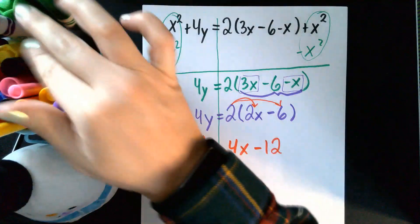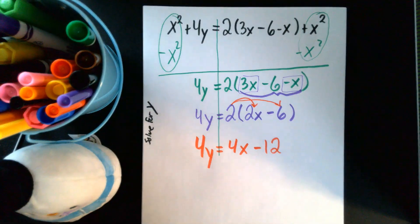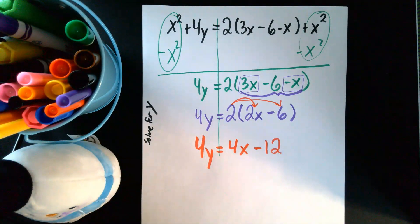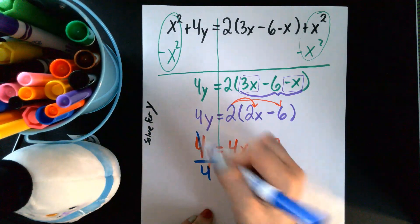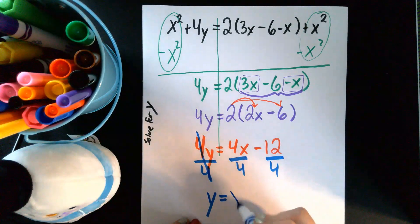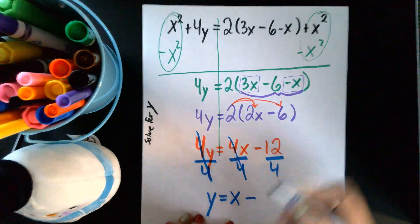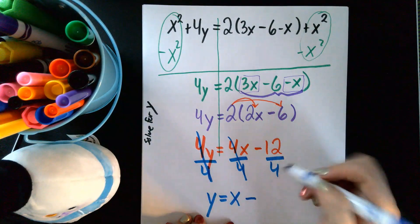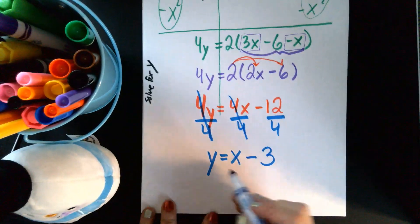Okay, so we did distributive property, probably not used blue. So our very last step is to divide. So we're gonna divide everything by four. Those fours go away, we're left with y equals four divided by four is one. And then twelve divided by four is three. So our end answer ends up being y equals x minus three.